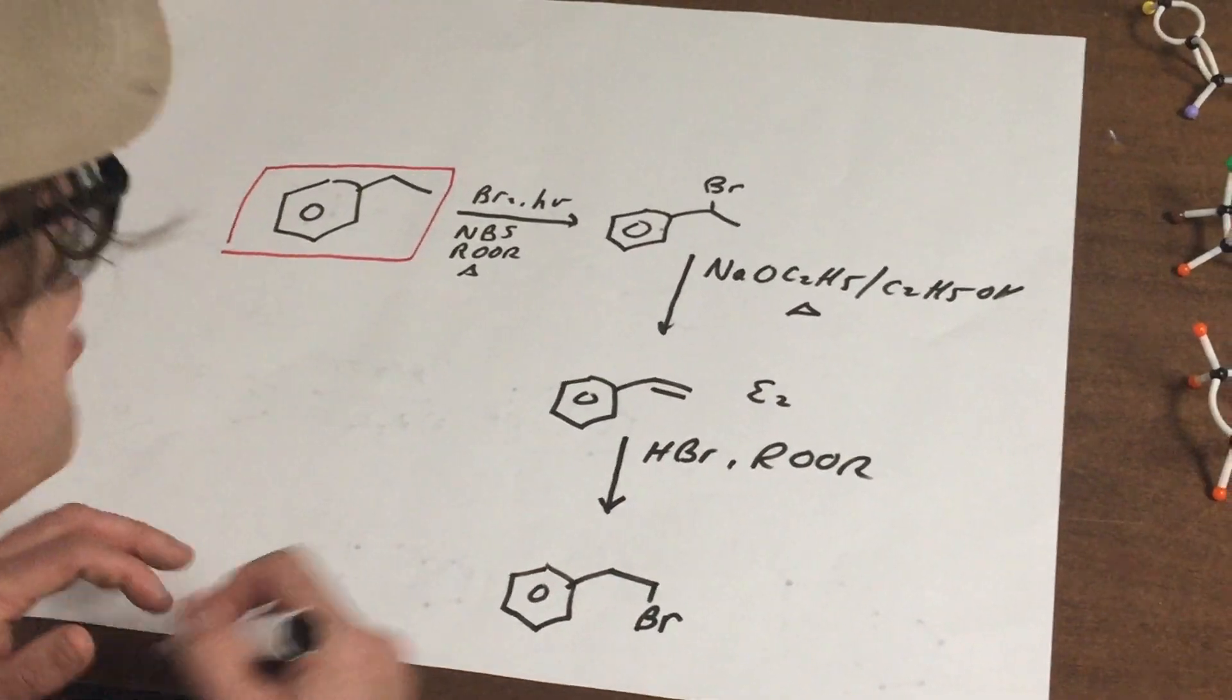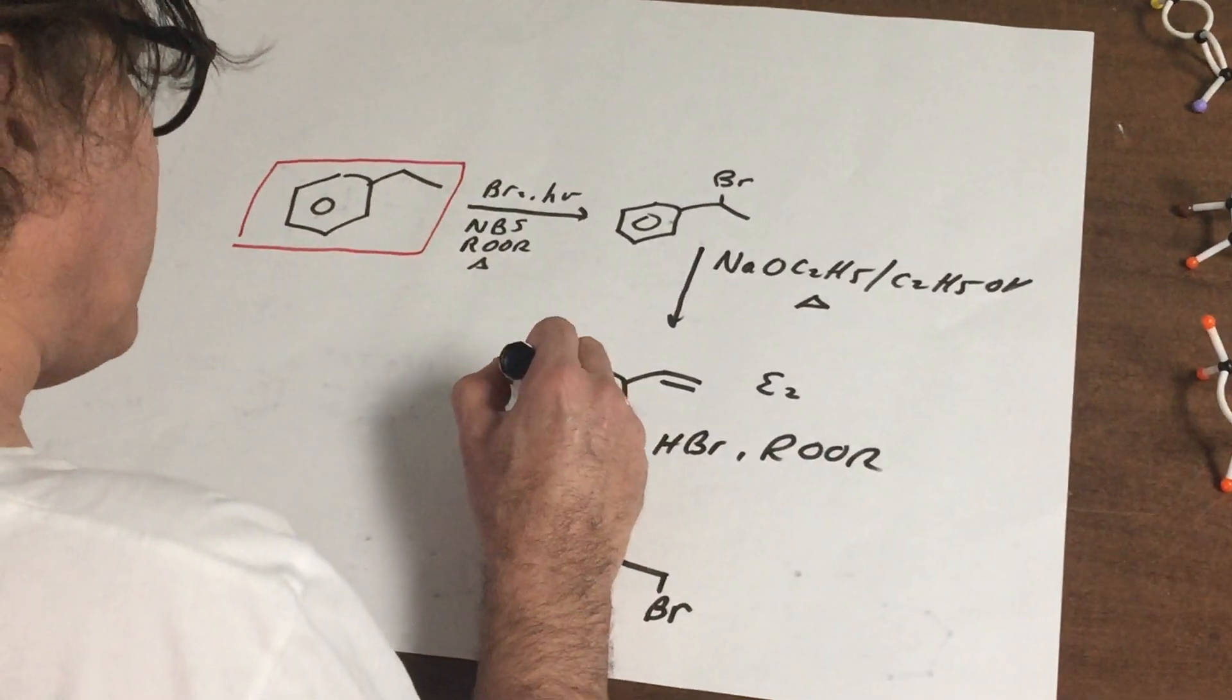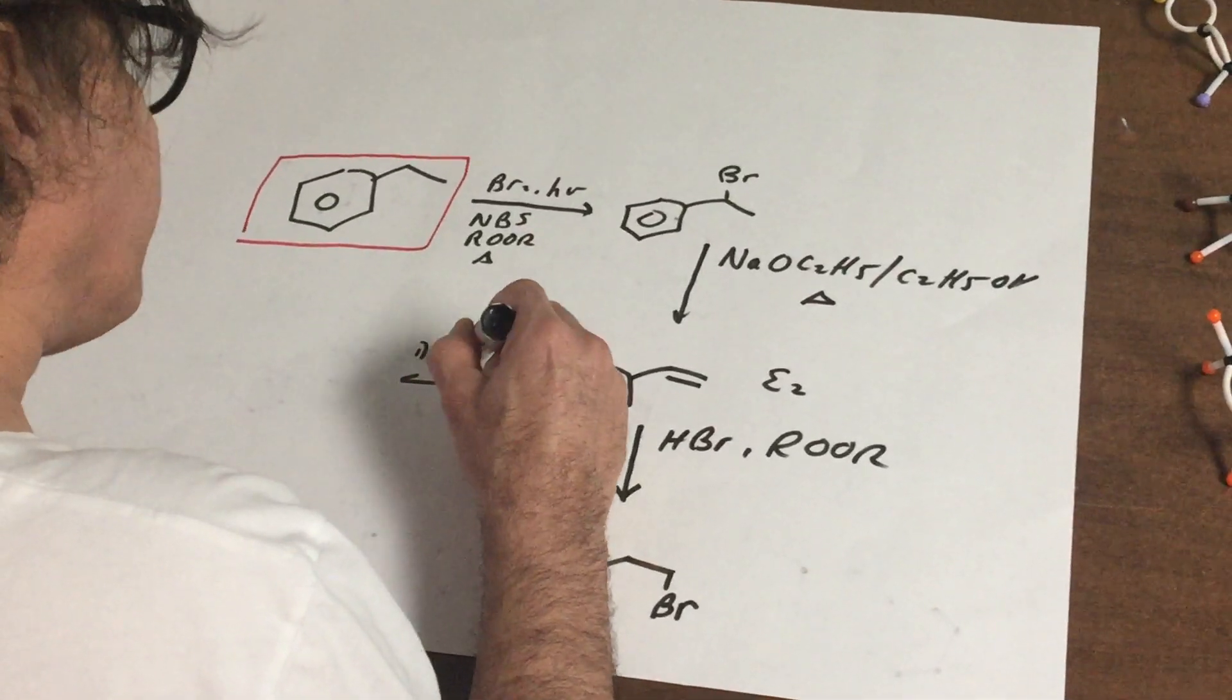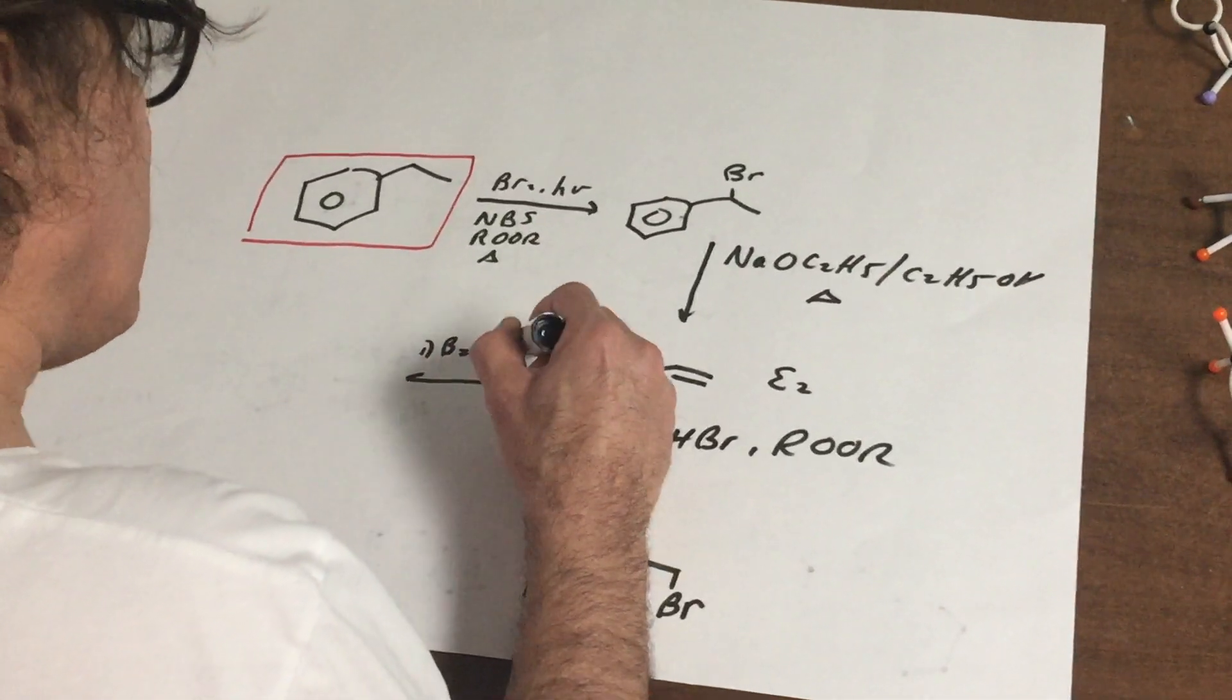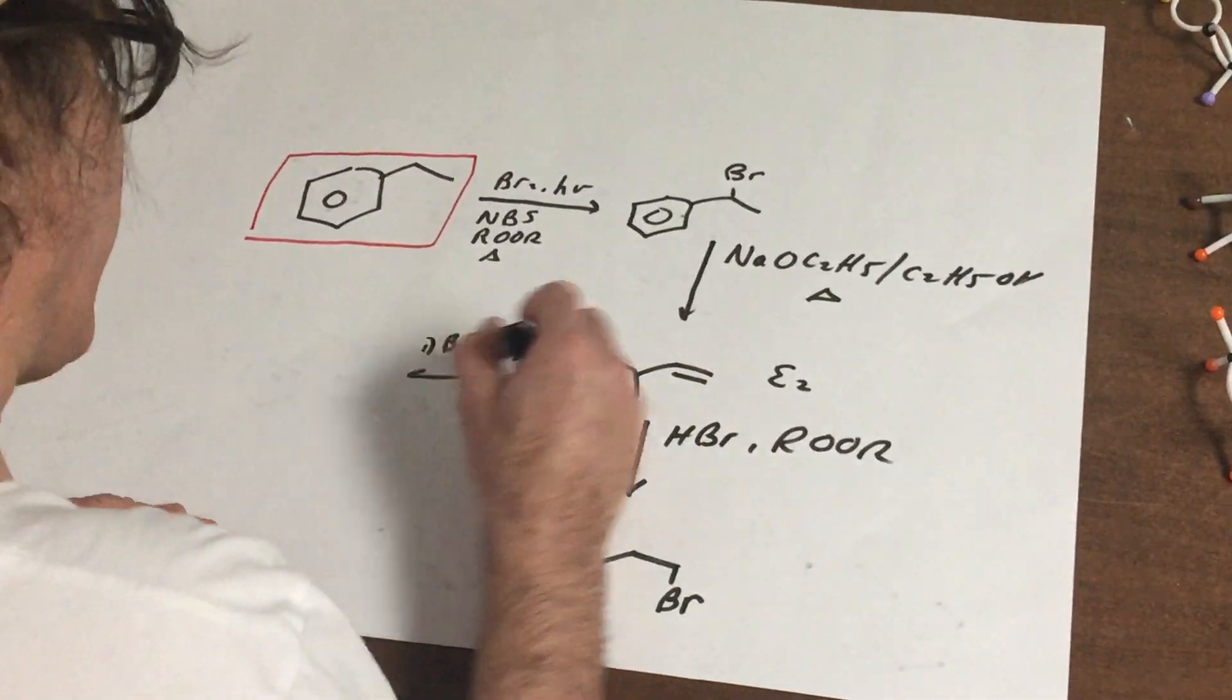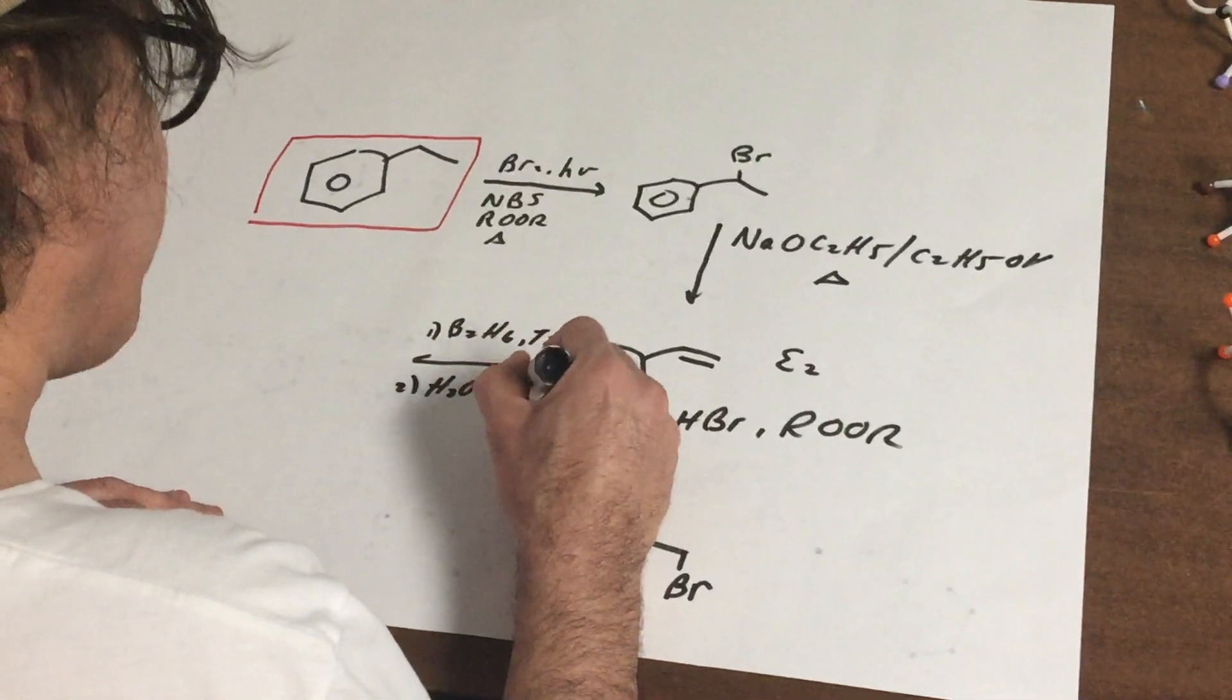So that's an anti-Markovnikov addition. It's also a nice radical mechanism. What I could do here is I could treat this with the dimeric B2H6. Sometimes you might see somebody write the monomer, which is BH3, and then peroxide base.